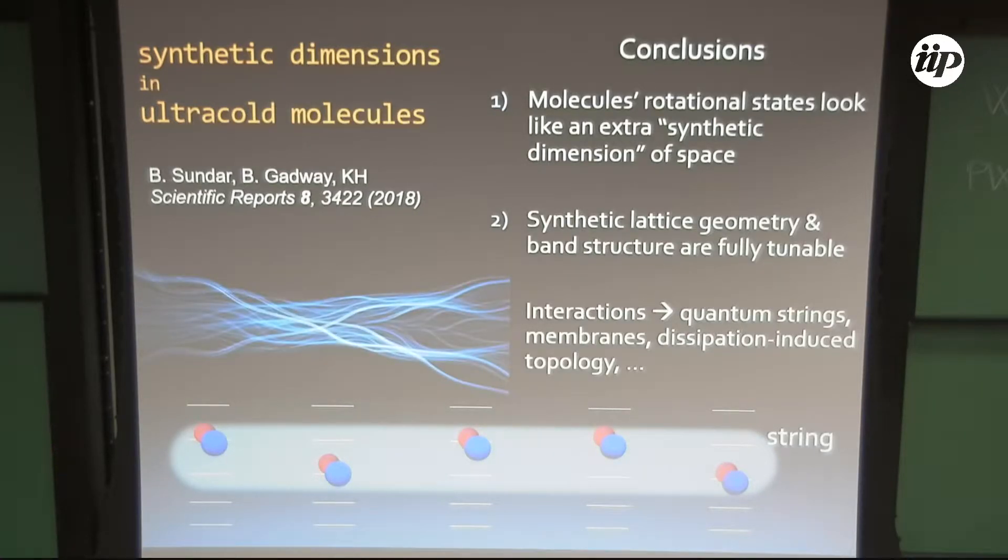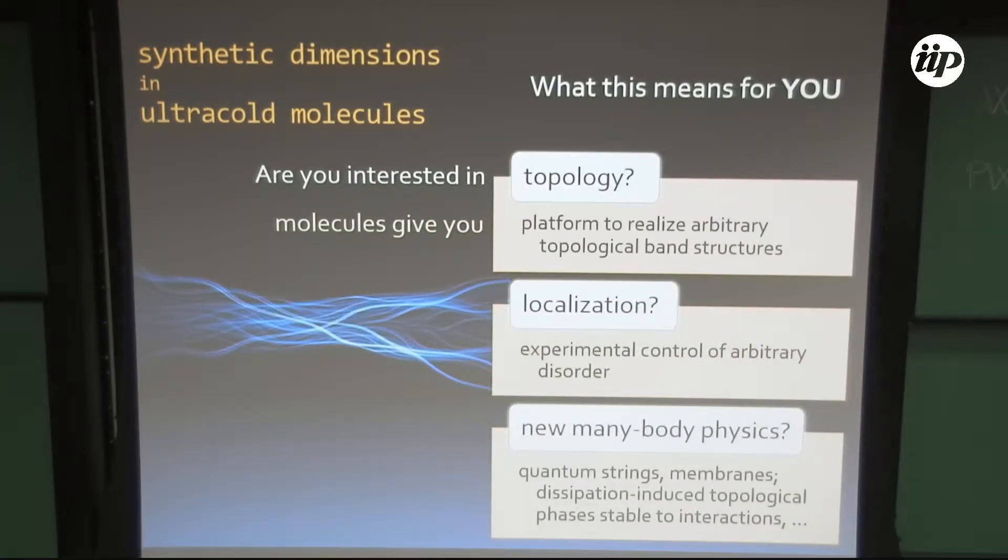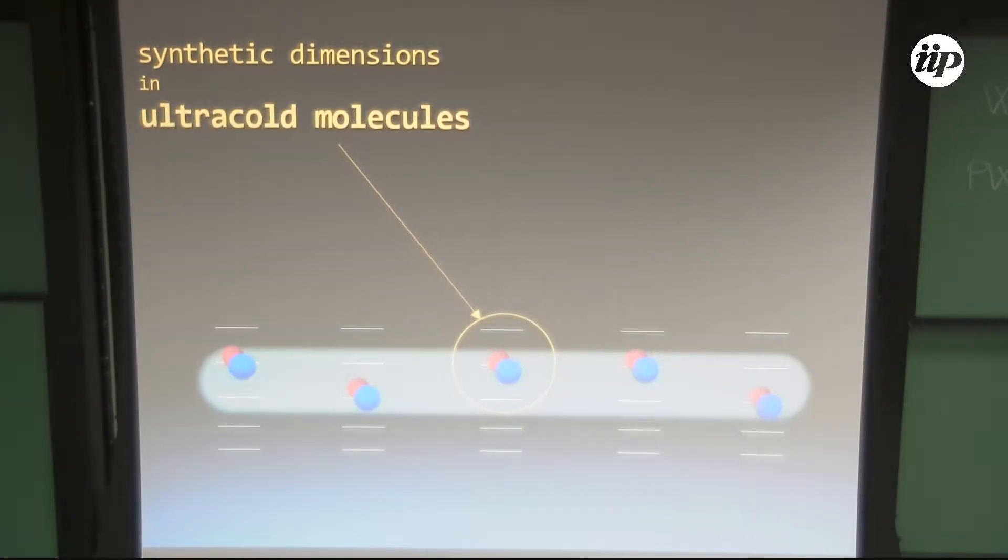So there are two things I need to describe to talk about synthetic dimensions and ultra-cold molecules. One is synthetic dimensions. The other is ultra-cold molecules. So let's start about thinking about molecules. Molecules are a relatively new addition to the ultra-cold family. We've had ultra-cold atoms for a couple decades now or more. But molecules are only in the last 10 years have been realized.